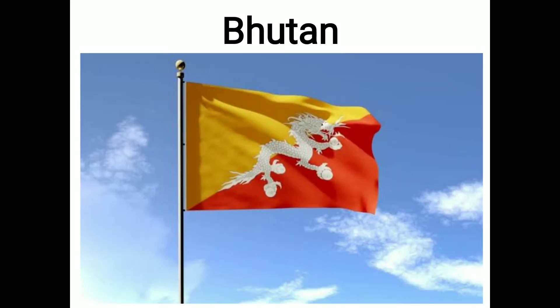The sixth flag is the flag of Bhutan. The national flag of Bhutan features a dragon from Bhutanese mythology, alluding to the Dzongkha name of Bhutan as well as the Drukpa lineage of Tibetan Buddhism, which is the dominant religion of Bhutan. The white color of the dragon represents purity, the yellow represents the royal kingdom, the orange represents Buddhist tradition, and the jewels represent Bhutan's wealth and security.